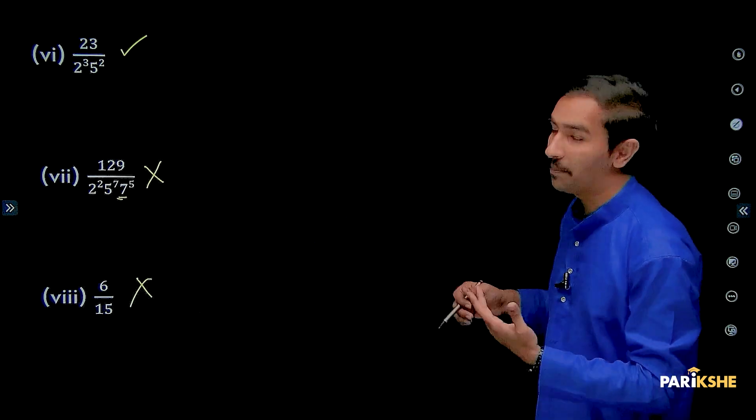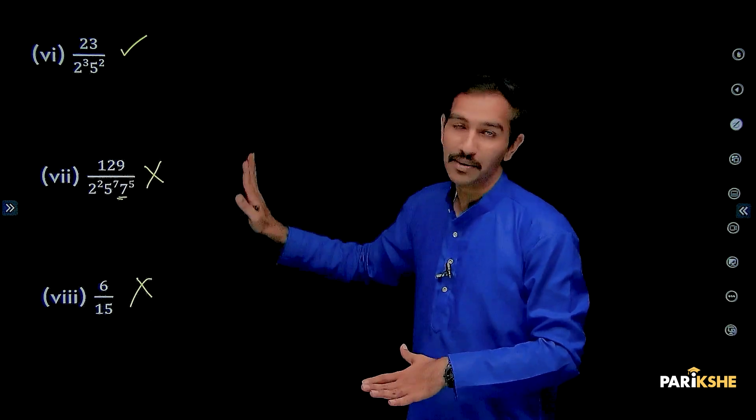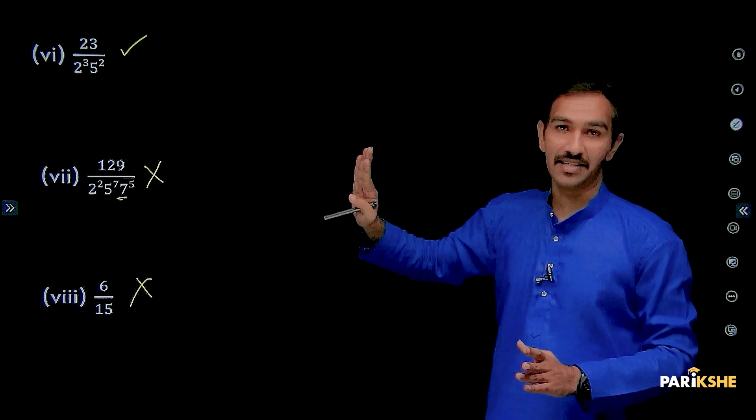This is also non-terminating. Denominator 2 to the power of n, 5 to the power of m, formatel iri lila andhre, adhu non-terminating, idhre terminating.